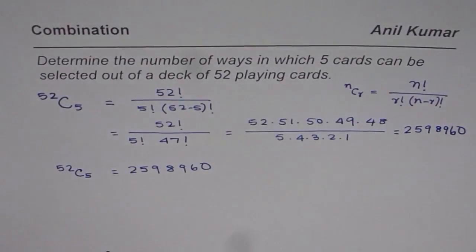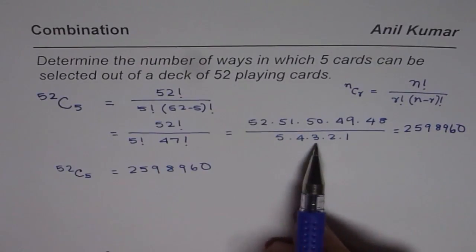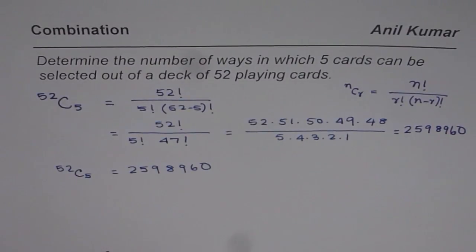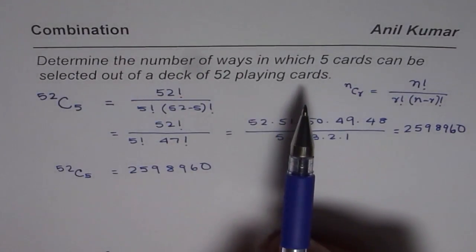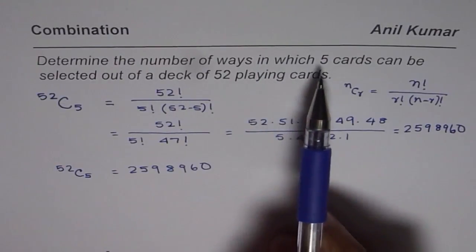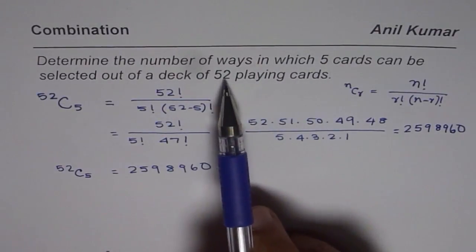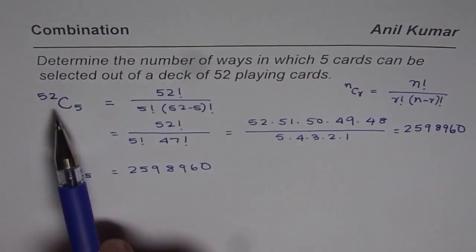So exactly the same answer. So you could use any of these methods to calculate. You can also multiply and divide as shown here. So I hope with this the concept is clear that in this given example when we take a group of 5 cards the order does not matter. And therefore it is a case of combination not permutation. Since we are trying to find ways of selecting 5 cards out of 52, the answer is 52C5.